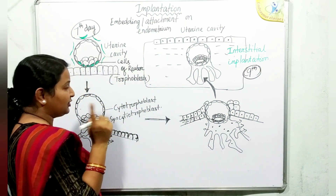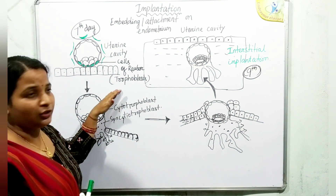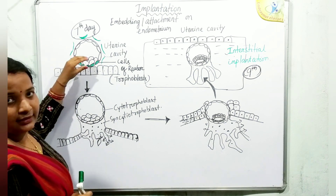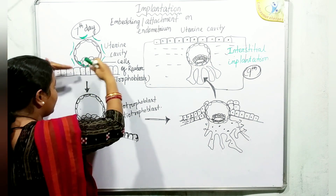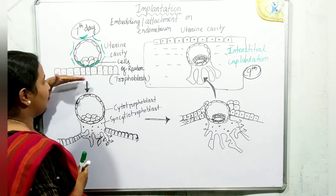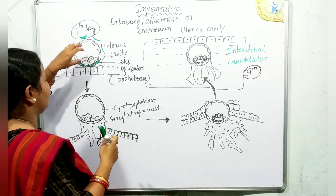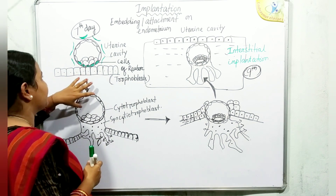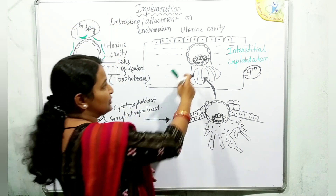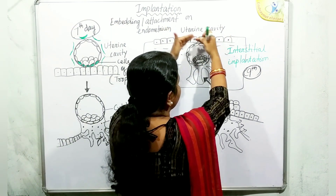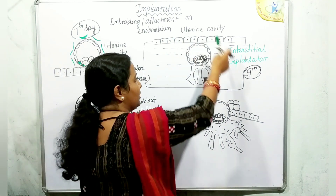An important point: implantation or attachment should occur on the inner cell mass side — the embryonic pole of the blastocyst should attach to the endometrial wall so there is proper space for fetal development. The trophoblastic cell layer will form the extra-embryonic membranes — chorion and amnion — surrounding the embryo.